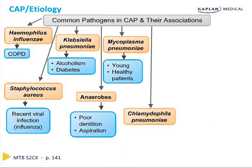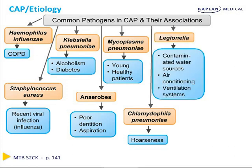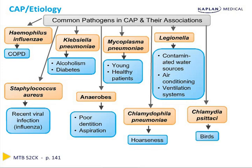Similarly, Chlamydophila pneumoniae can also cause pneumonia in young healthy patients, but you should be aware that this type of pneumonia can result in hoarseness of the voice. Legionella can also cause community-acquired pneumonia, and this is usually found in places with contaminated water sources — usually air conditioning or ventilation systems are the culprit. Chlamydia psittaci is usually associated with birds and is only seen in people who have very close contact with birds.